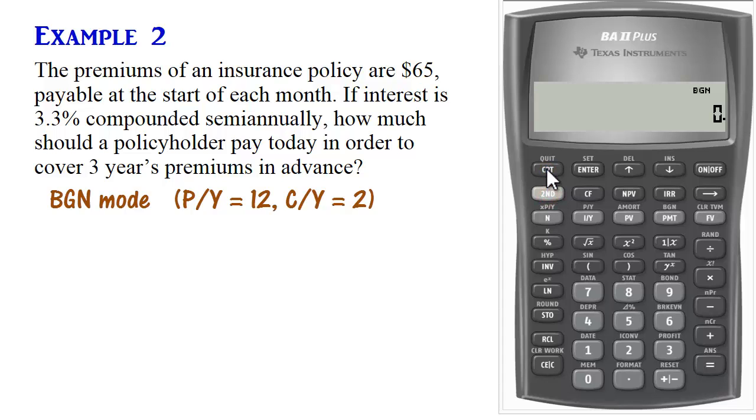In this case, payments are made for three years at the start of each month. So N will be 3 times 12, which is 36, so there will be 36 payments altogether.